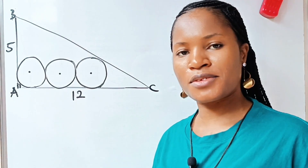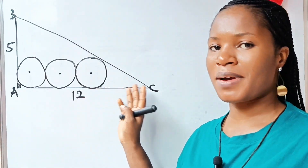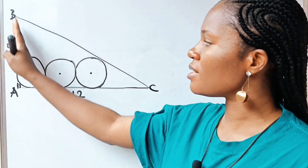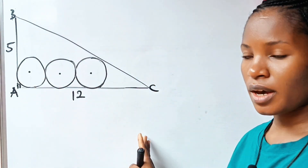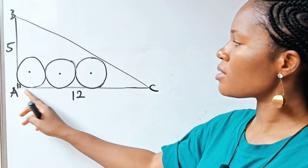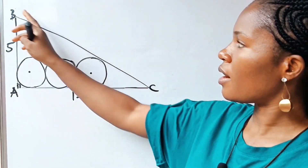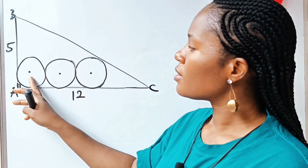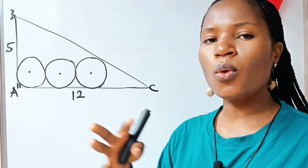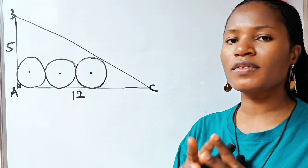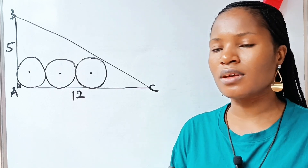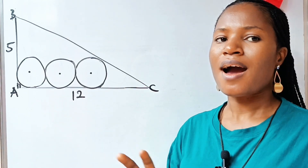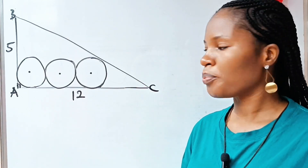I'm going to apologize as usual — this is my diagram and it is not drawn to scale. This is a right-angled triangle. These circles are equal; they are of the same magnitude in everything, which simply means that their radii are the same.